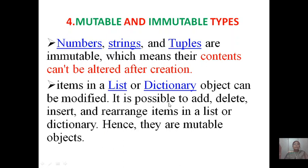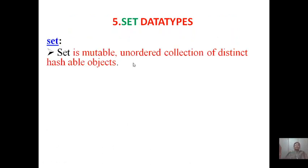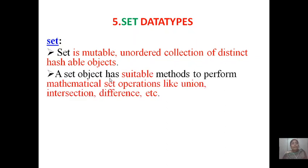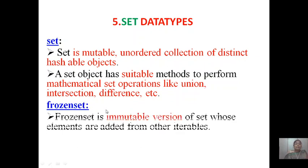Next one is set data types. Set is mutable - mutable means you can add, delete, insert, and rearrange the items. Set is an unordered collection of distinct hash table objects. A set object has suitable methods to perform mathematical set operations like union, intersection, difference, etc. Frozen set is immutable version. Immutable version means you cannot change once it is declared. That is why it is called frozen. It is a set whose elements are added from other iterables.